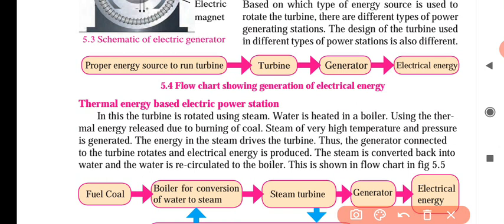The energy in the steam is derived from the turbines. The turbines rotate from the steam. Thus the generator connected to the turbines rotates and electrical energy is produced.